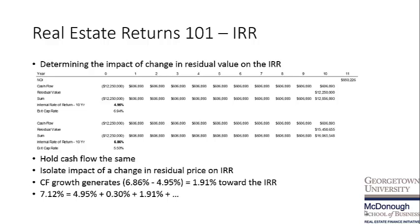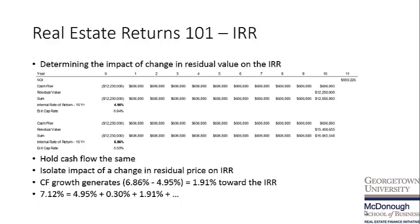We are selling the asset for more than what we acquired it for, contributing another 191 basis points to our IRR. To recap: our internal rate of return of 7.12% is inclusive of the year one cash return at 4.95%, the change in cash flow over the 10-year period at 30 basis points, and the change in residual value at 191 basis points.